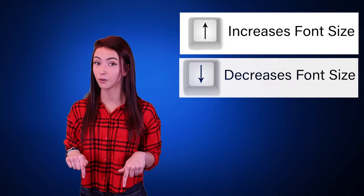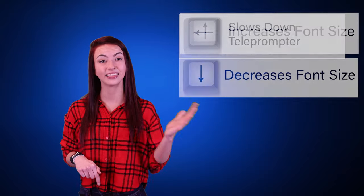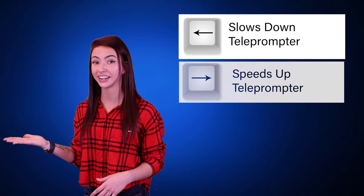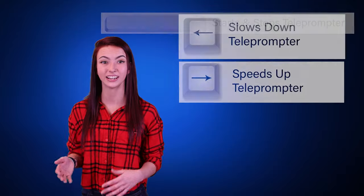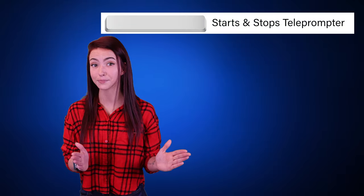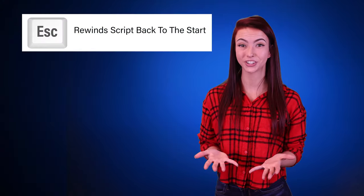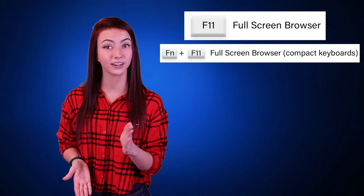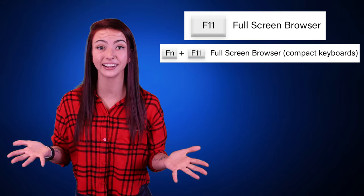Here are some useful keyboard shortcuts to control your teleprompter: Up increases font size, Down decreases font size, Left slows down the teleprompter, Right speeds it up, Space starts and stops the teleprompter, Escape rewinds your script back to the start, F11 enters full screen browser, and Fn plus F11 on compact keyboards. Having trouble with keyboard shortcuts? Don't forget to use your mouse or touch screen to click on the script once it's running to allow keyboard input on the screen.